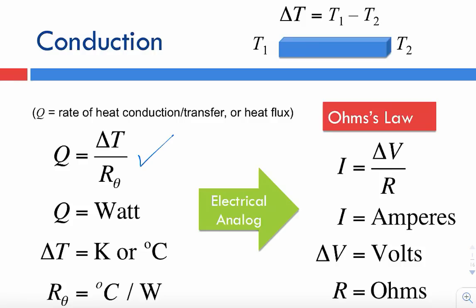There is an electrical analog for this that many of us are very familiar with — Ohm's law. In that equation, current is equal to the voltage delta V divided by the electrical resistance R. So the electric current corresponds to heat flow, and voltage corresponds to the temperature differential.